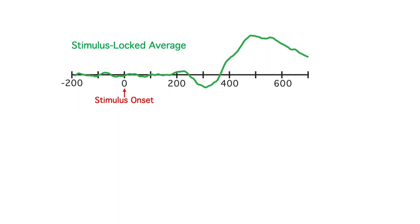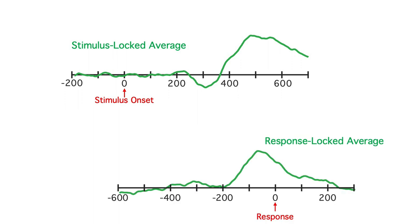Although most researchers focus on stimulus-locked averages, where time zero is stimulus onset, you can instead time-lock to the response. This gives you a response-locked average.